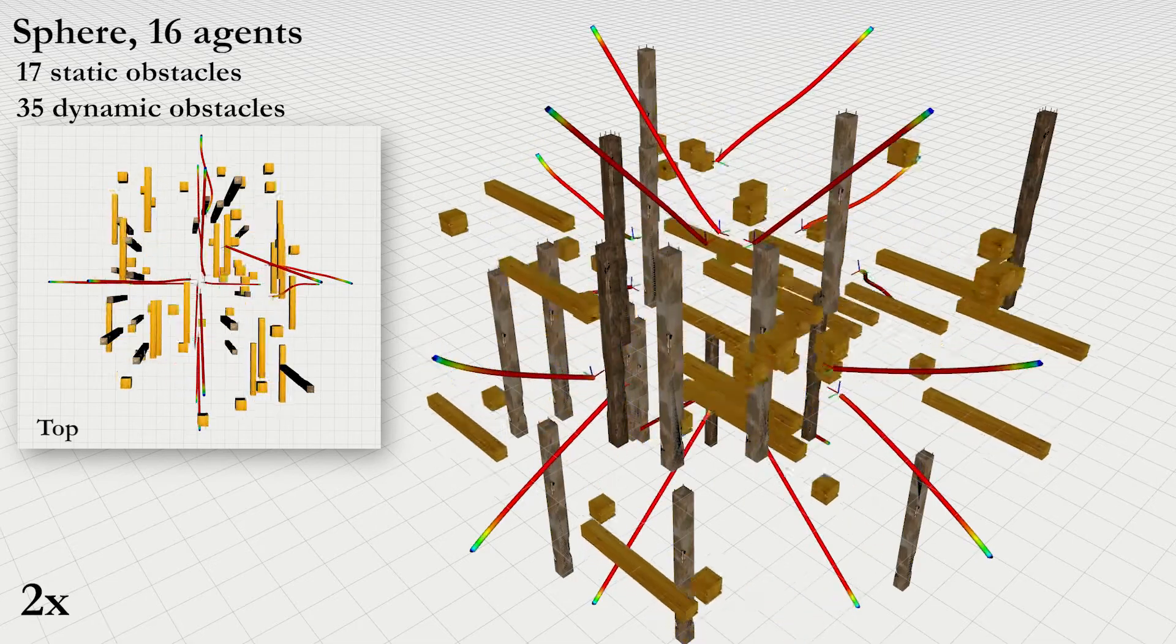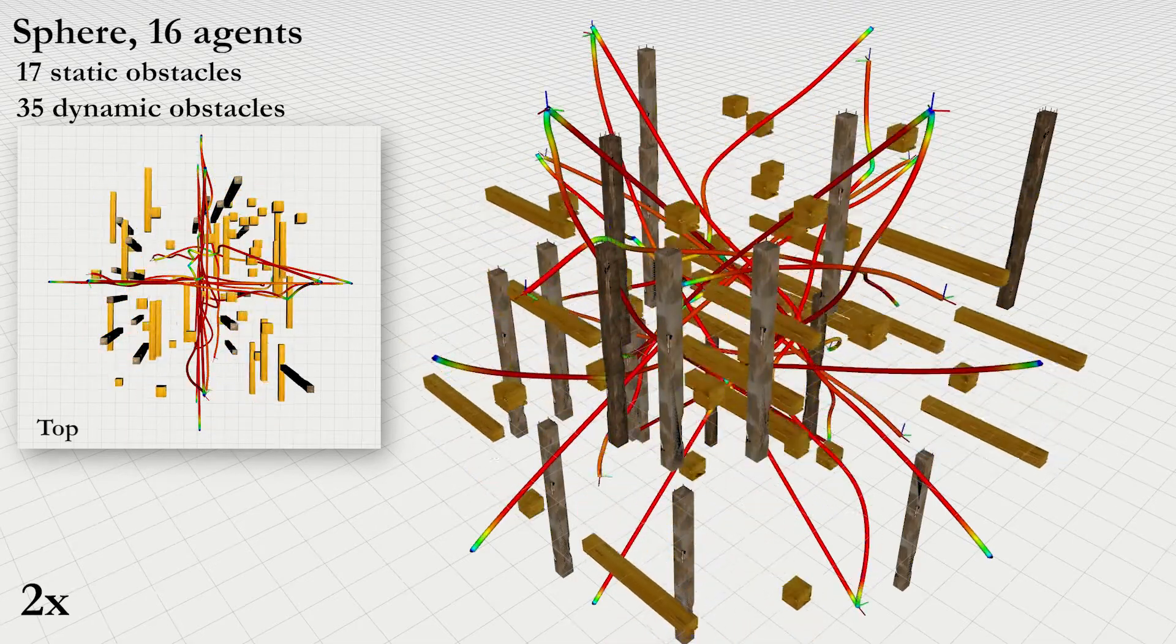We now use a sphere as the initial configuration for the agents, and increase the number of dynamic obstacles.